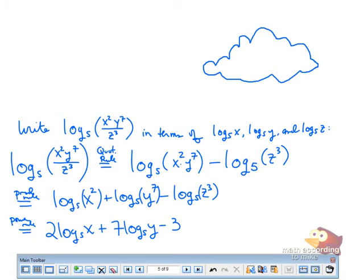Minus 3 log base 5 of z, you said? Good. So you said the previous one was subtraction, so we're just copying it down. Yes. So since these two were being multiplied, it was a plus. Since this was a division, it's a minus.